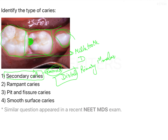Rampant caries is a type that is acutely and extensively distributed, involving a lot of teeth in the individual. Since the other teeth are very healthy and only one tooth has a problem, we can exclude rampant caries as well. This is also not the pit or fissure — it appears to be the proximal or distal surface area — so we can rule out pit and fissure caries and choose smooth surface caries.